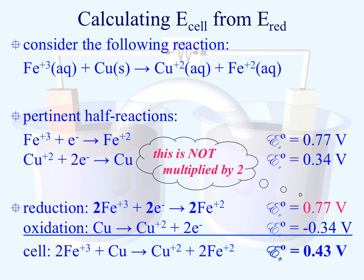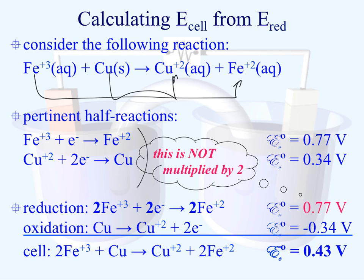So how do we calculate E-cell from our standard reduction potentials? If we have a reaction where iron is being reduced and copper is being oxidized, we find the half-reactions from our standard reduction potential table. We have the reduction of Fe3+ to Fe2+, and the reduction of Cu2+ to Cu0. Both are written as reduction processes, but we know that iron is being reduced and copper is being oxidized, so we need to adjust these half-reactions accordingly so electrons are balanced.